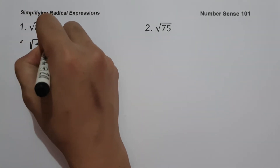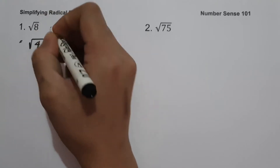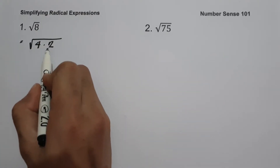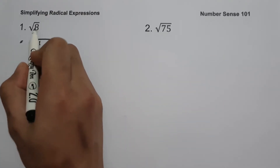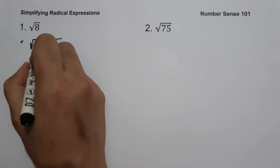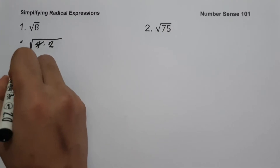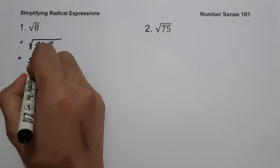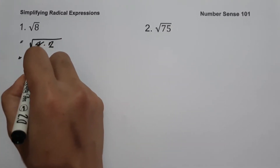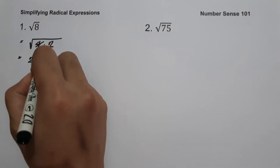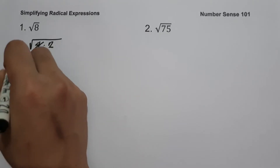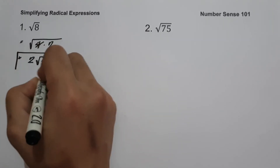...4 and 2. 4 multiplied by 2 is 8, and the square root of 4 is 2. Therefore we are going to have 2 square root of 2, and this will be our answer.